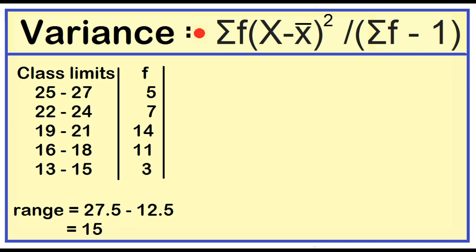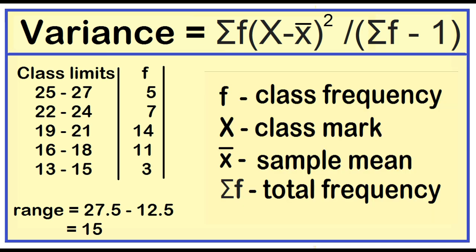Variance. Variance is equal to the sum of the product of the frequency and the squared deviation all over the total frequency minus 1. Where f is the class frequency, capital X is class mark, x bar is sample mean, summation of f is total frequency.